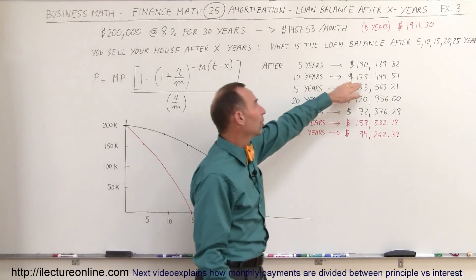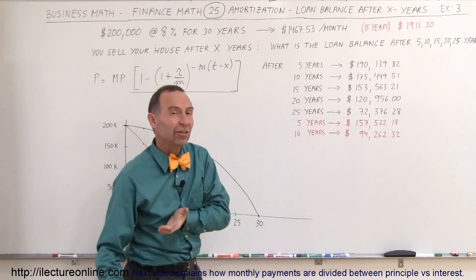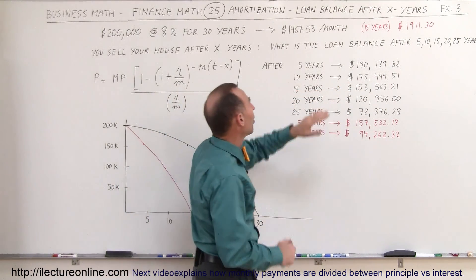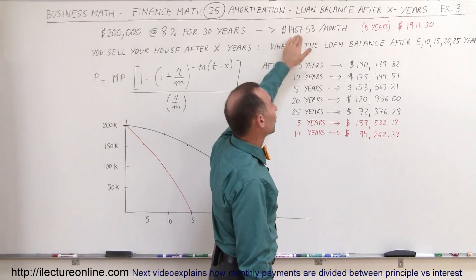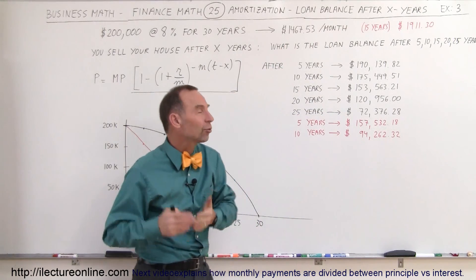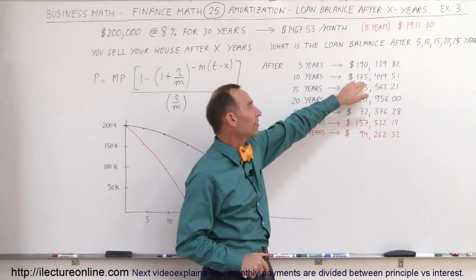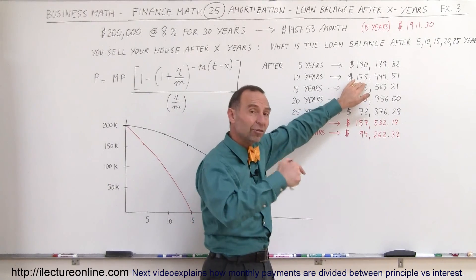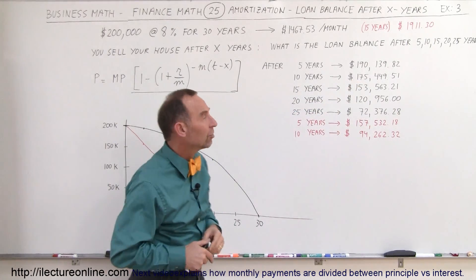After 10 years the principal is still $175,000. After 10 years of making these payments, which is $170,000 worth of payments, only $25,000 of it will go to paying off the principal and the rest of it will be interest.